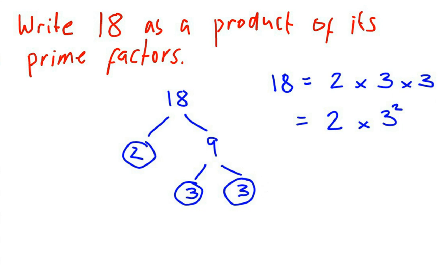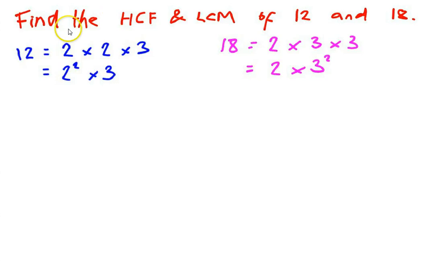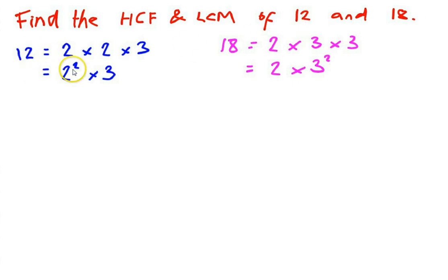Now we can use what we've done to find the highest common factor and lowest common multiple. You'll get a question like: find the HCF and lowest common multiple of 12 and 18. These are the two numbers we've just done the prime factor trees for. So I've expressed 12 as 2 times 2 times 3, and 18 as 2 times 3 times 3. To do the next step we're going to use a Venn diagram — two big overlapping circles, one representing 12 and one representing 18.